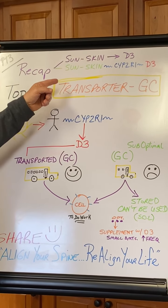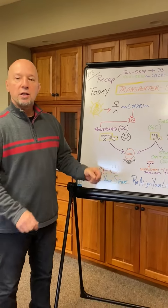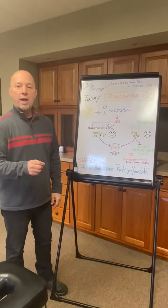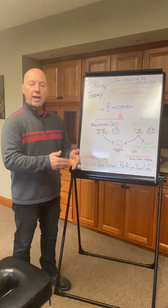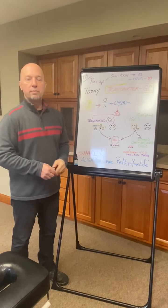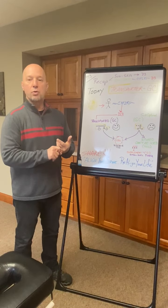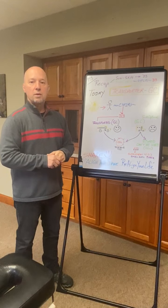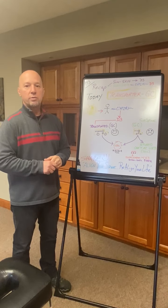In part two, we talked about that same thing — the sun and your skin — but the first important part, which is the converter gene, the CYP2R1 gene. If you don't have an optimal gene, if yours is suboptimal, then you can't convert the sun's energy to produce D3, or even if you get your D3 through fortified cereals or milk, you can't convert that D2 to D3.